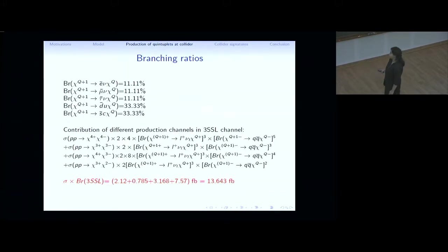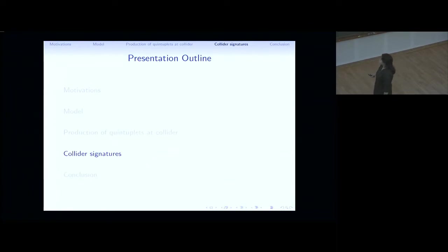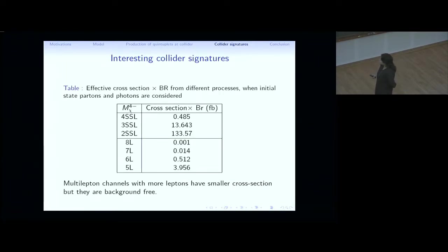Next we have the collider signatures. These are the interesting collider signatures that we are looking for. This should be the channels. We have the four same sign leptons, three same sign leptons, two same sign leptons cross-section times BR. As we require more number of leptons, you can see the cross-section times BR is decreasing. But the advantage is, again, the multi-leptons channels with more leptons have smaller cross-section, but they are practically background-free. Even if you have a smaller cross-section, if you are able to produce very small number of events that can pass your selections, you can have a good result. Similarly, we can have this five leptons, six leptons, seven or eight leptons channels.